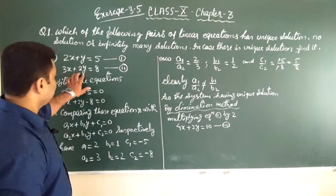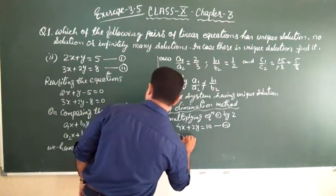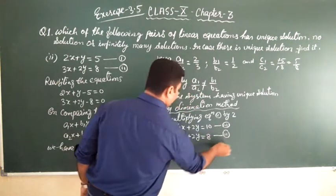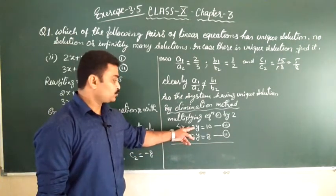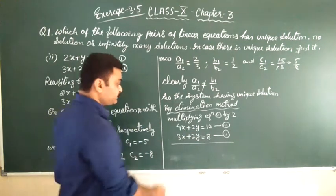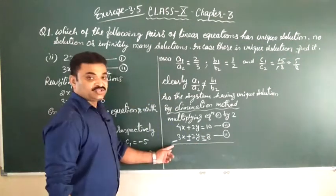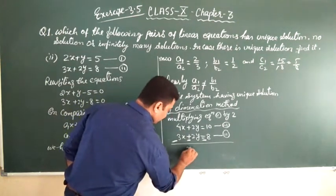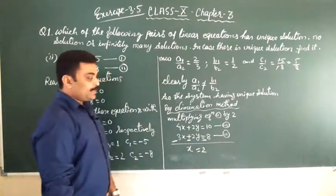Now write equation number 3 and 3x plus 2y is equal to 8 as equation number 2. Here, coefficients of y are equal and the signs are also equal. So we will subtract equation number 2 from equation number 3. We change the sign of each term, 4x minus 3x is equal to x, 2y minus 2y is equal to 0, equals 2. x is equal to 2.